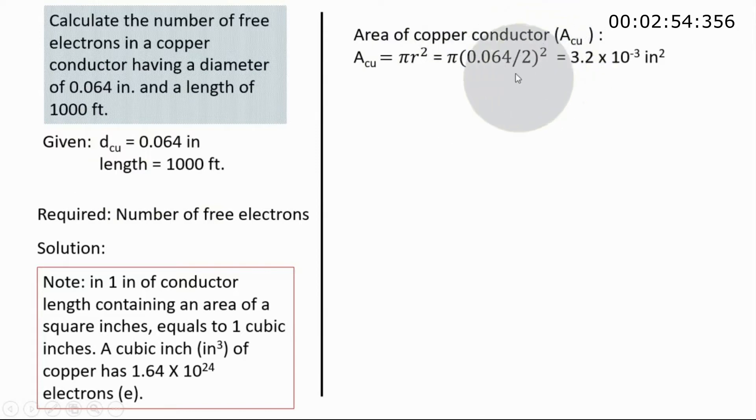If you have your calculator, you just use your calculator. When you touch the equal button, it will give you this value: 3.2 times 10 raised to the negative 3. The unit is square inches because this is area.